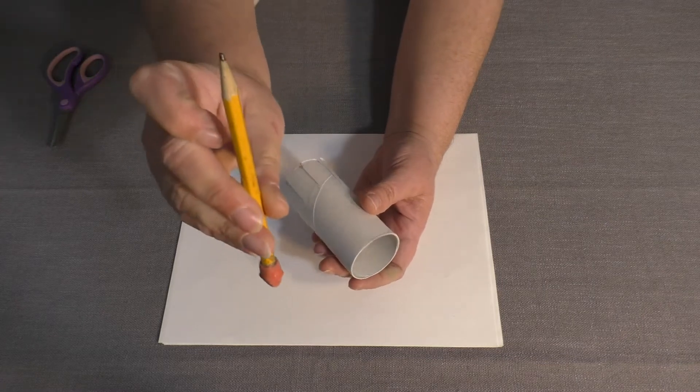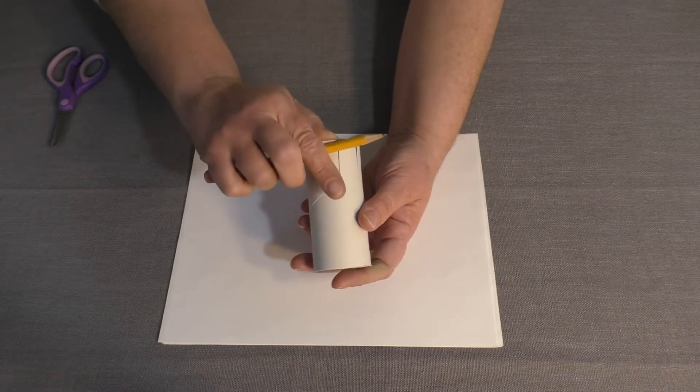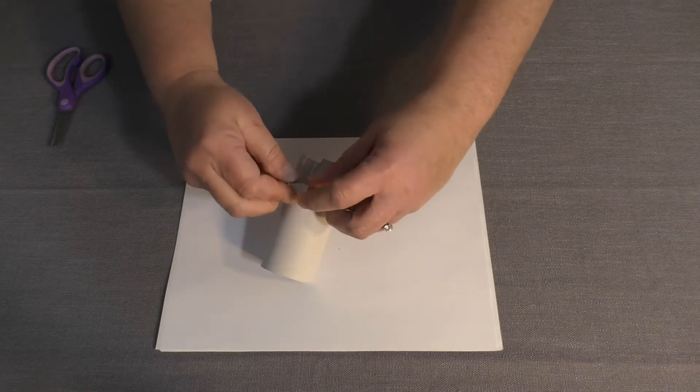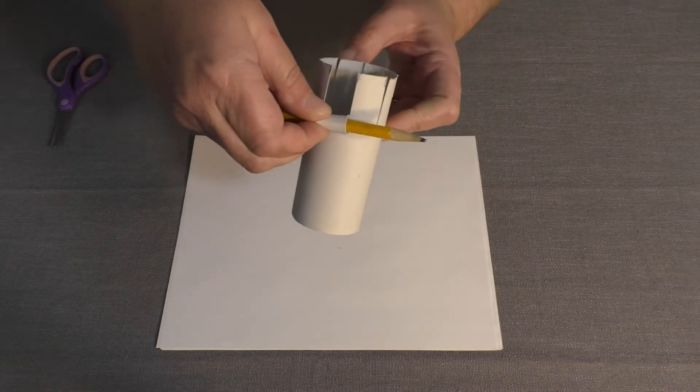Step 3. Using a pencil, wrap the arms and hold for a few seconds, then release. This creates a curl to the arms.